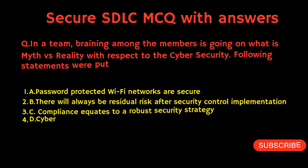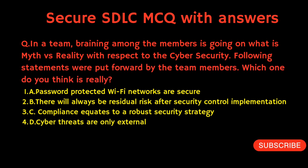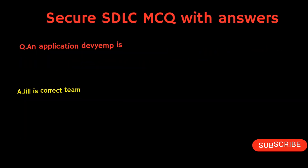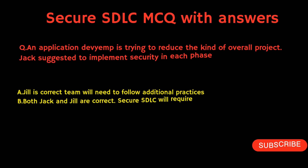In a team, a discussion about myth vs. reality with respect to cybersecurity is going on. Statements are put forward by team members — which one is reality? The answer is Option B: there will always be a residual risk after a security control implementation. Additionally, in a multi-tiered architecture, it provides a larger attack surface than single-tiered architecture — true or false?